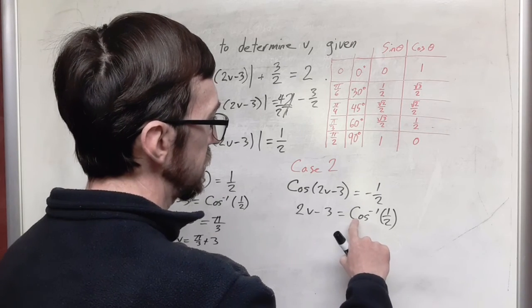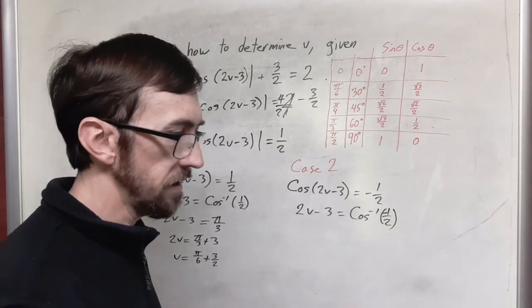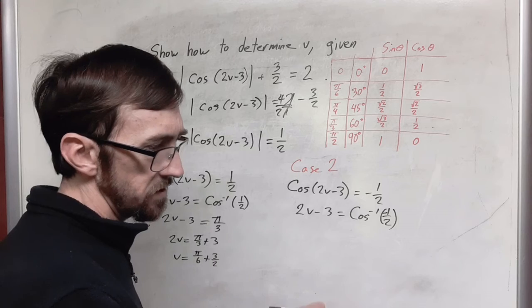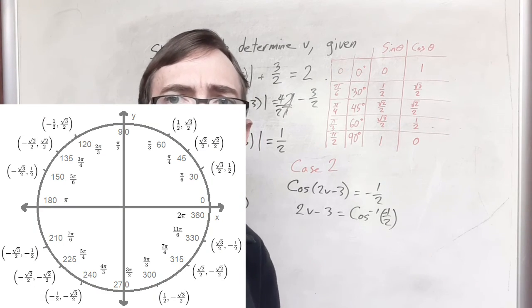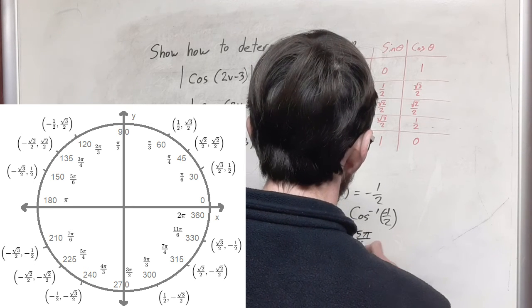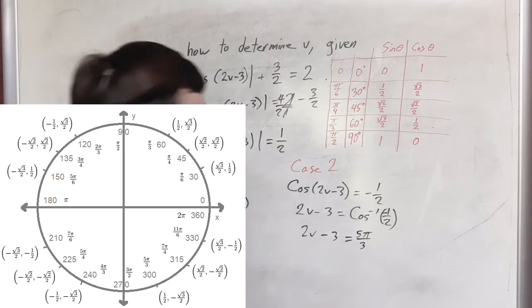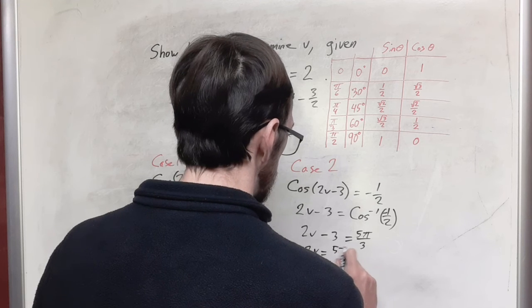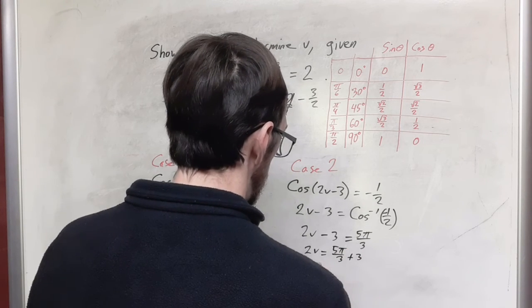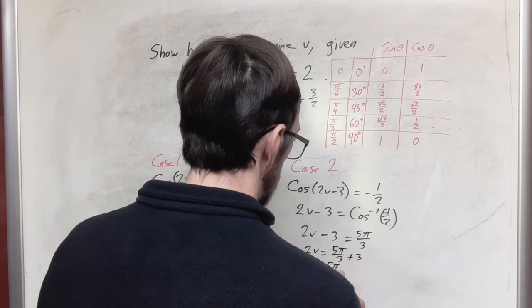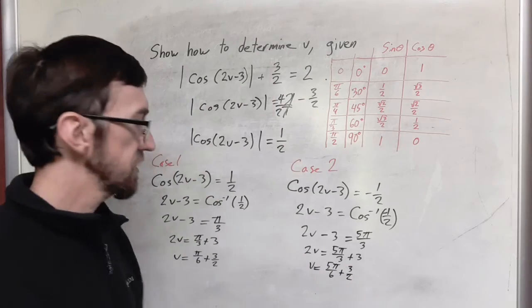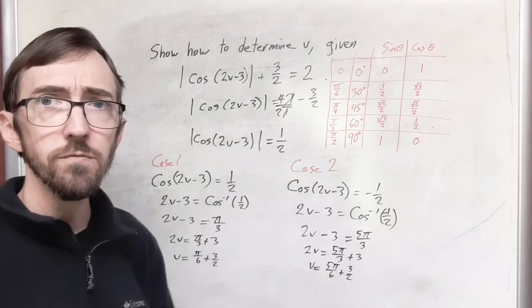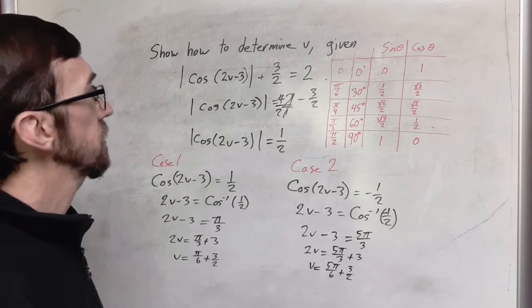Now over here we have the arc cosine of negative half. So we are rotating in a clockwise direction 60 degrees. So you might use the unit circle for this. And then we're back at the same situation. We're just going to solve this for v so I'm going to add three to both sides. And then I'm going to divide by two. And so on this one I have five pi sixths plus three halves. And these are the two v values that would make this original statement true.